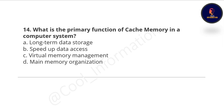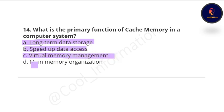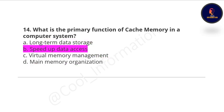Question 14: What is the primary function of cache memory in a computer system? Option A: long-term data storage, Option B: speed up data access, Option C: virtual memory management, Option D: main memory organization. The correct option is speed up data access.